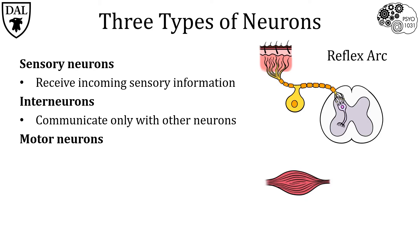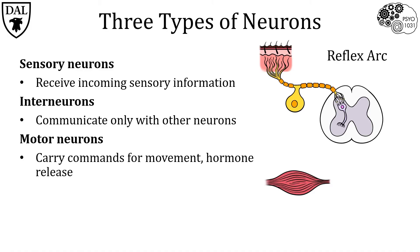The final neuron type are motor neurons. Motor neurons receive innumerable inputs from neurons in the brain, spinal cord, and periphery. They are located within the central nervous system and send signals to both muscles and glands throughout the periphery. Thus, they function to regulate not just movement but also hormone release.